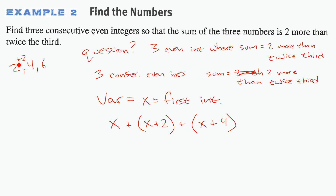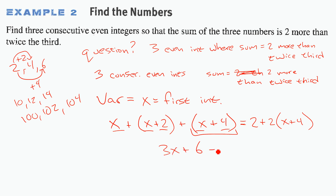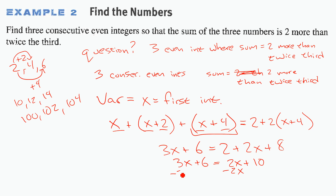For consecutive even integers, the pattern is x, x+2, x+4 — for example, 2, 4, 6 or 10, 12, 14. Set up: x + (x+2) + (x+4) = 2 + 2(x+4). Simplify: 3x + 6 = 2x + 10. Subtract 2x + 6 from both sides: x = 4. So the first number is 4.